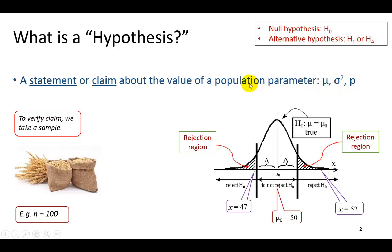The conflict we speak to here exists because we don't have at our disposal the entire population data from which to be certain of what the true population parameter is. We can only make inferences based on samples, and so this leaves open the debate as to what the parameter value truly is.